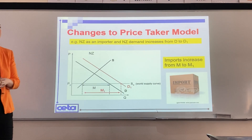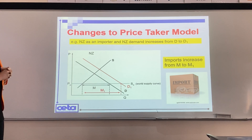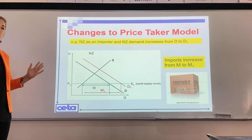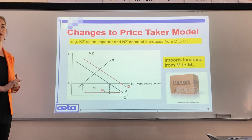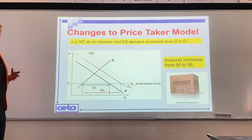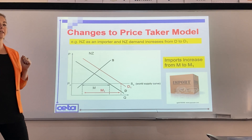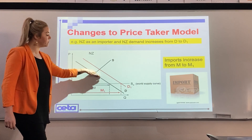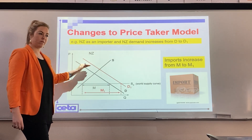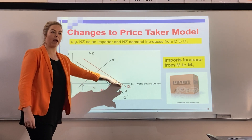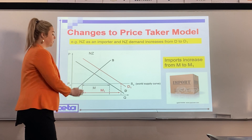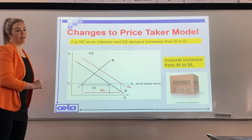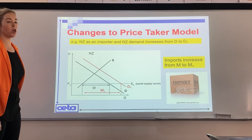If we make changes to the price taker model, we can shift both the demand and supply curves, because there are factors other than price that shift the curves. For example, if New Zealand is an importer and demand increases from D to D1, we show this by shifting our demand curve to the right. A shift to the right of demand is always an increase because we're increasing along the x-axis.